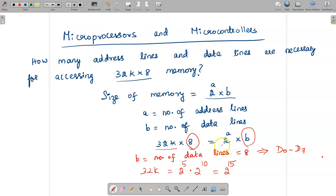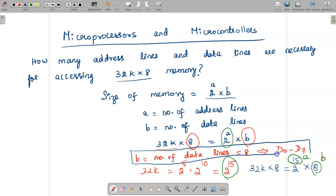Now we can compare this value with this. I can easily say that the number of address lines is 15. Given the size of the memory as 32k × 8, I can write 32k as 2^15 × 8. So a value is 15, b value is 8. We've determined b is the number of data lines, which is 8, represented as d0 to d7.